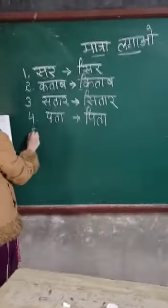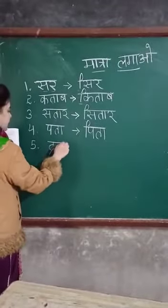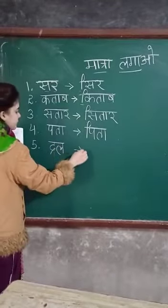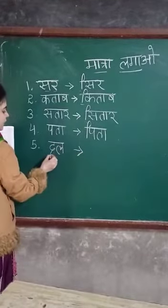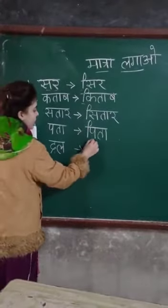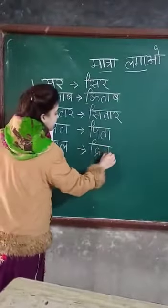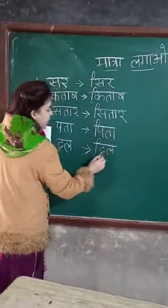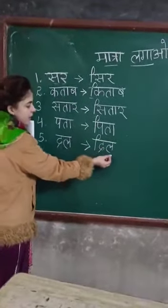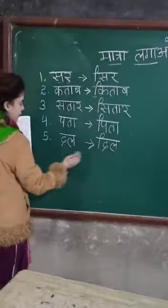Now our fifth word is D, la — dal. D, la — dal. Now what will become? Dil. It will become dil. D, la — dil. Okay?